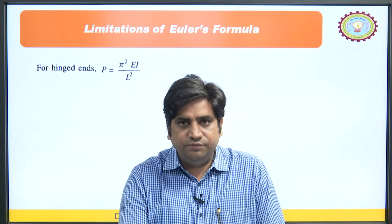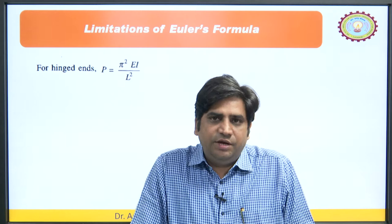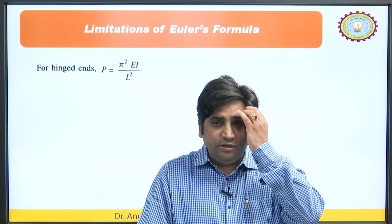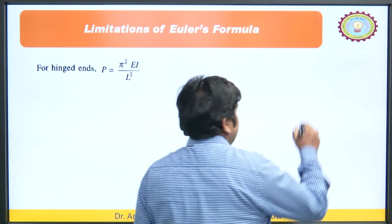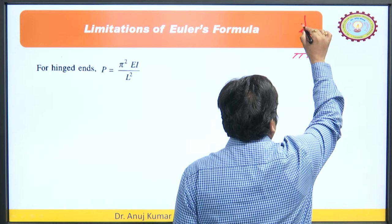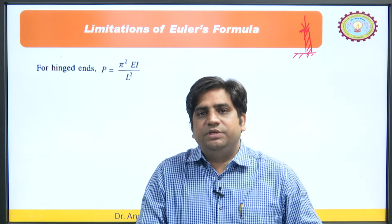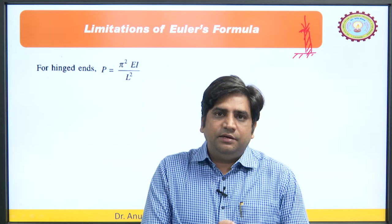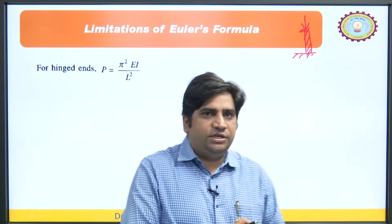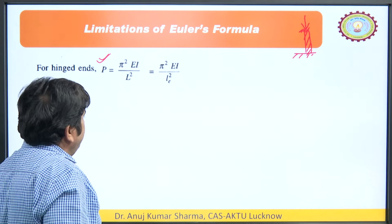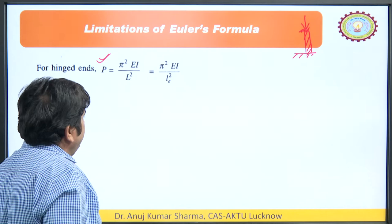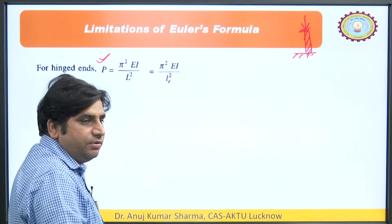Now let us see the limitations of Euler's formula. Euler derived his formula for long columns, assuming that compression due to direct stresses could be neglected. He said that if a column is very short and we apply a compressive load, it may fail due to direct stress. But long columns will not fail that way — they fail due to buckling, not crushing. So he neglected that effect. The formula can be written as π²EA / (Le/K)², where Le/K is the slenderness ratio, and the crippling stress depends on E and the slenderness ratio.